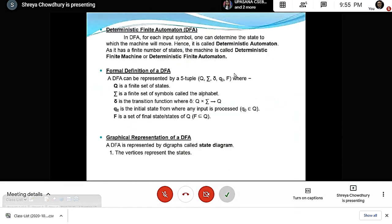According to the definition, in DFA for each input symbol one can determine the state to which the machine will move. Hence, it is known as deterministic automaton.